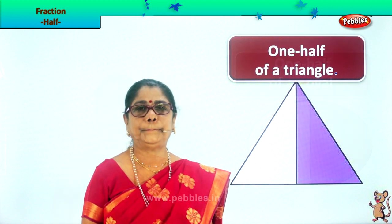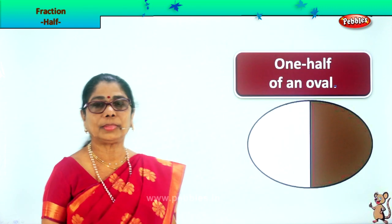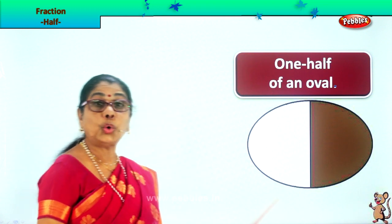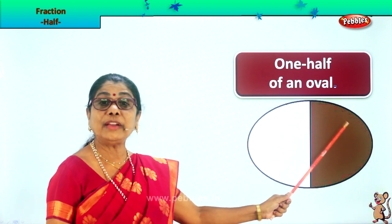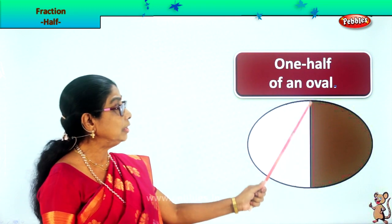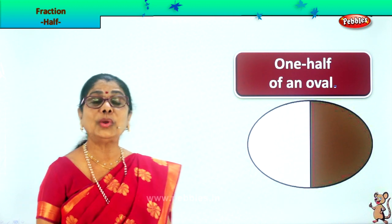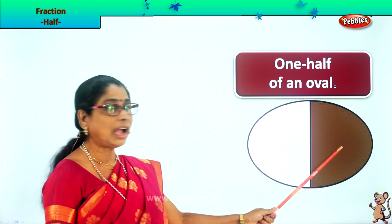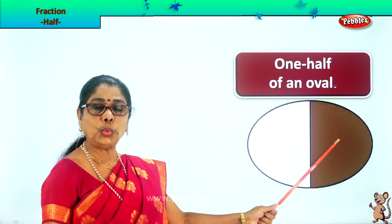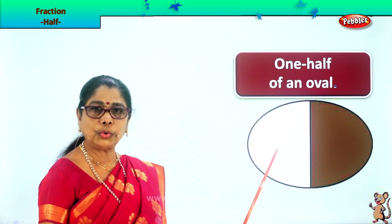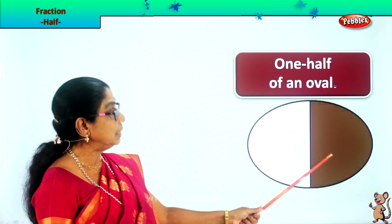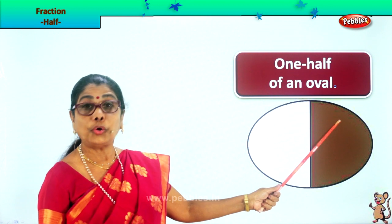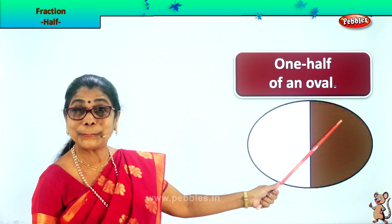Let's take another shape. This is an oval shape. We have cut this oval shape into two equal halves. We have one half of an oval shape, and this is one half of an oval shape.